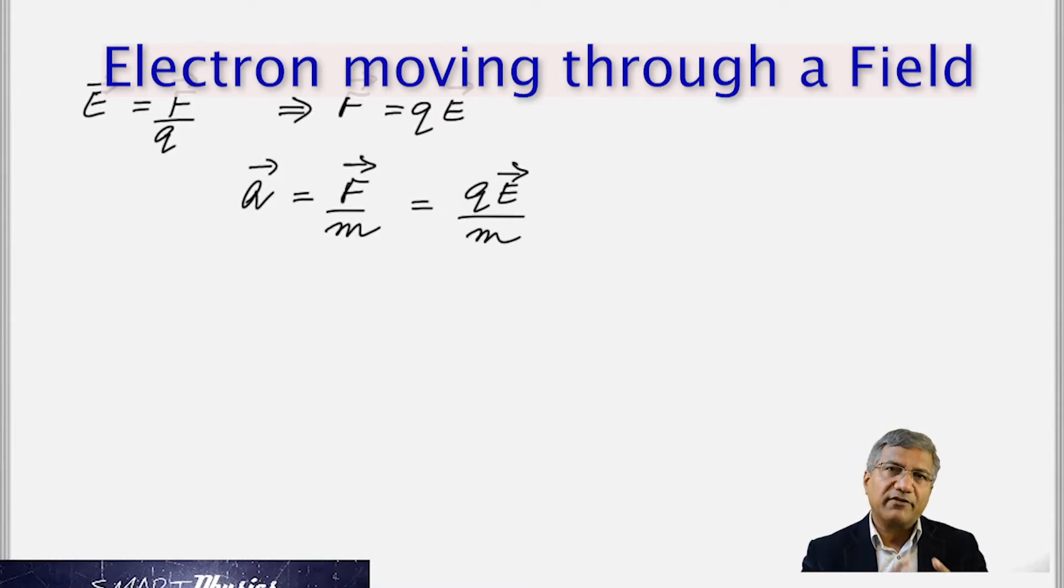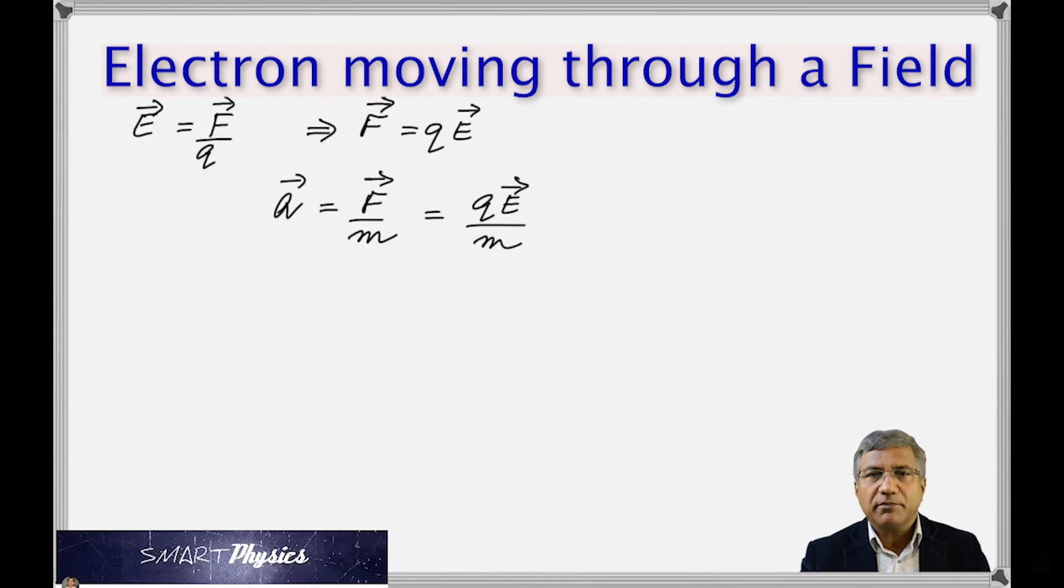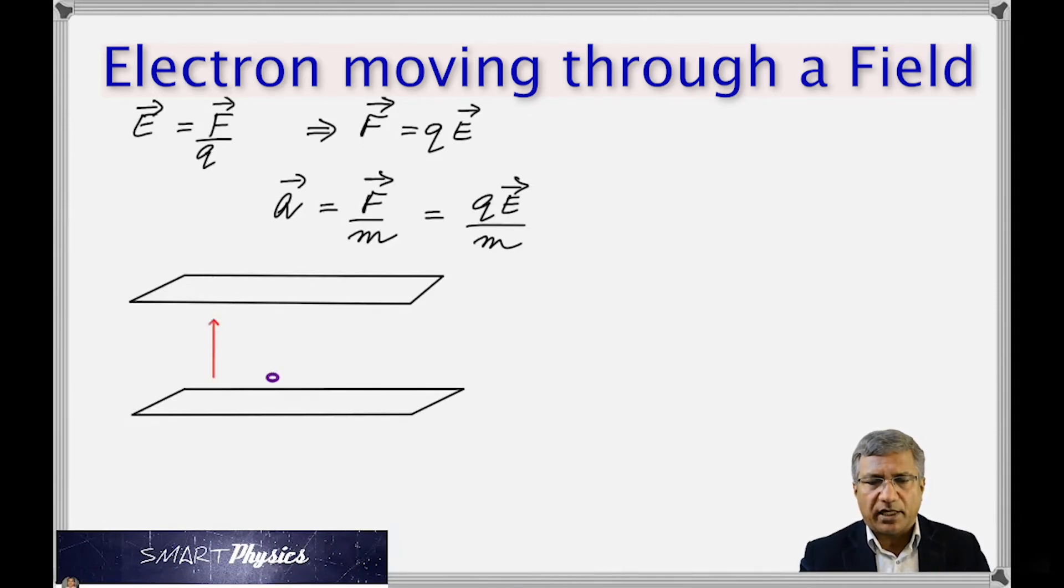So once you have the acceleration, we can now use kinematic formulas to find the final velocity or the time it takes, etc. So let me show you how that is done. Let's say this is an electric field set up by two parallel plates and the red arrow now shows the direction of the electric field. Remember that the direction of the electric field is the direction along which a positive charge would move.